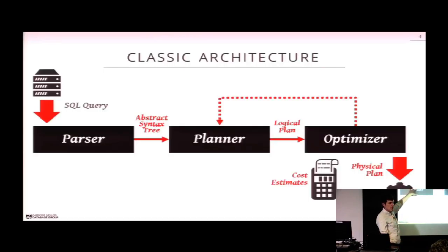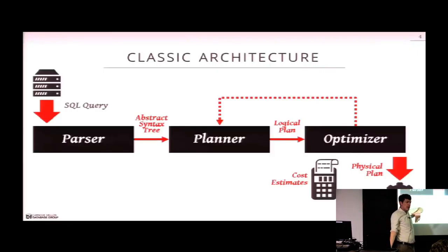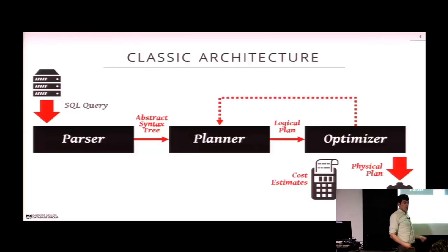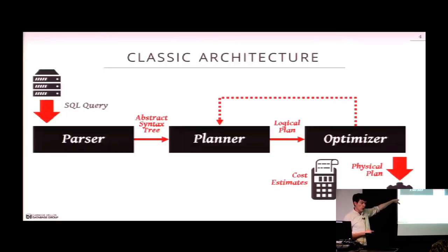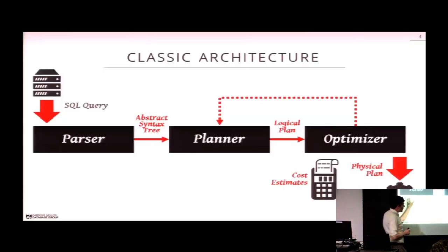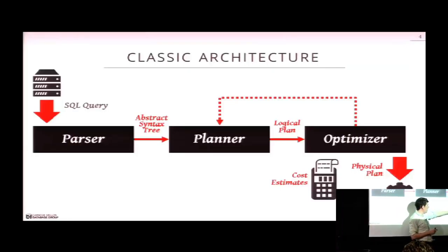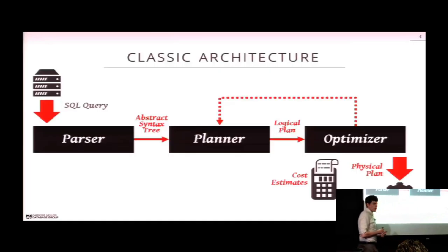For today's lecture and Wednesday, we're really going to focus on the optimizer and cost estimator. There's nothing interesting to say about the parser — it's just taking something like yacc or bison and converting SQL into tokens and then a tree. There's no way to really speed things up there. If you're writing a database system from scratch, you almost never want to write the parser yourself — find one you can reuse. There are way more Java ones than C++ ones.